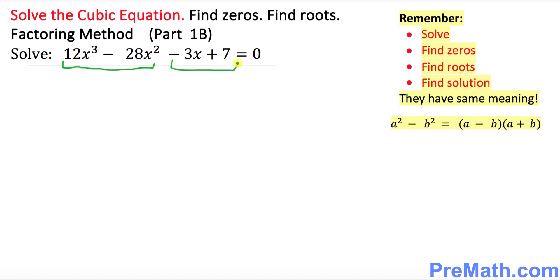So first part and this is second part. Now the next thing what I want you to do is in the first part, do you see what is in common among this pair? So between this pair, what is in common? This is common is going to be 4x squared. That is correct.